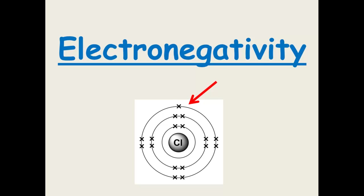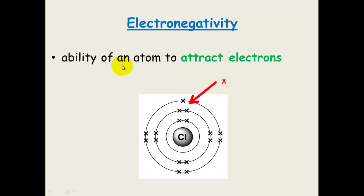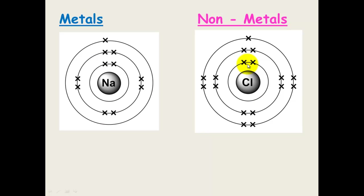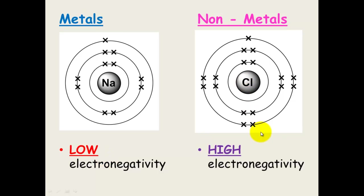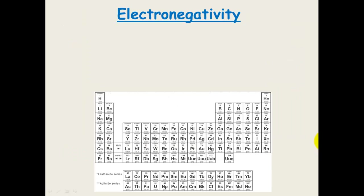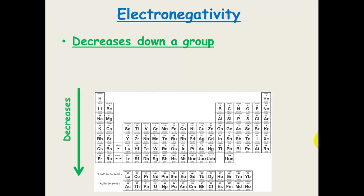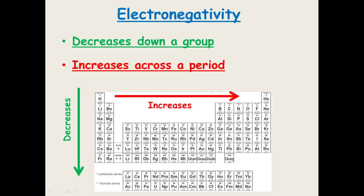Electronegativity — think of it as the opposite of ionization energy — is the ability of an atom to attract electrons. Sodium has low electronegativity because it wants to give away its electron. Chlorine has high electronegativity because it has more protons and only needs one more electron to get a full outer shell. The trends in electronegativity: it decreases as you go down a group and increases as you go across a period, with fluorine and that region of elements having some of the highest electronegativities on the periodic table.